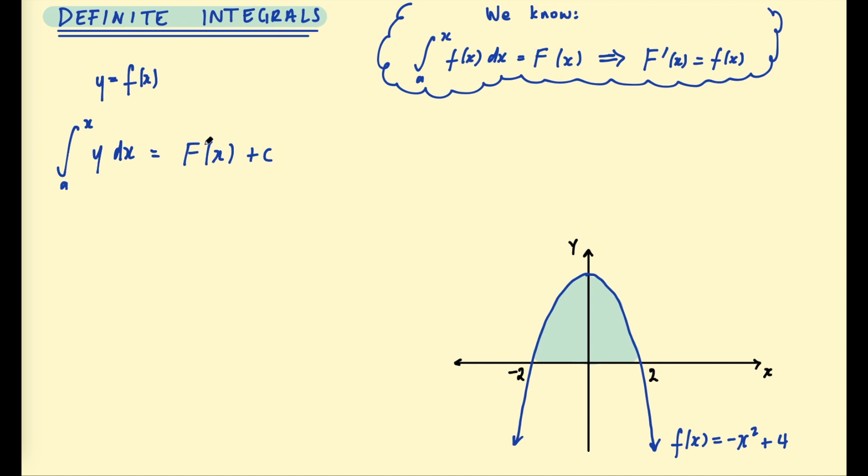Now this represents all possible antiderivatives of f of x. We know all antiderivatives will differ only by a constant. That's why we add the plus c there. We don't exactly know what this antiderivative will be. We could have this area if we can solve for c and we can solve for c using a clever step here.